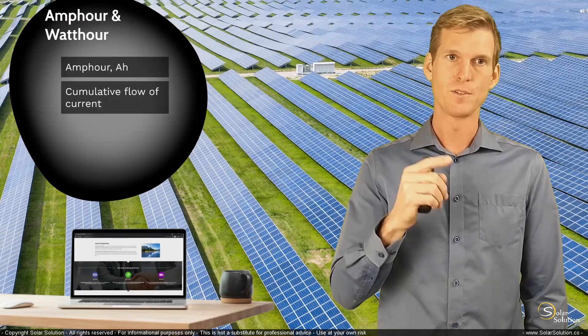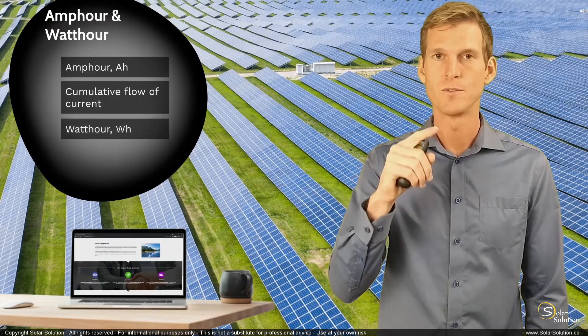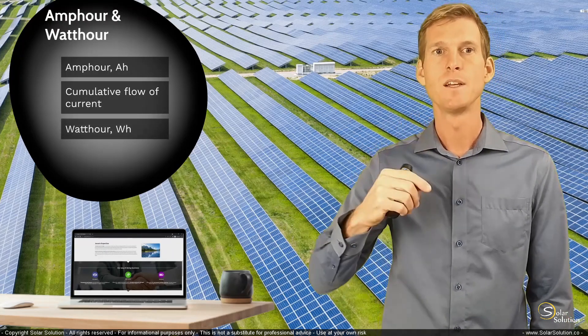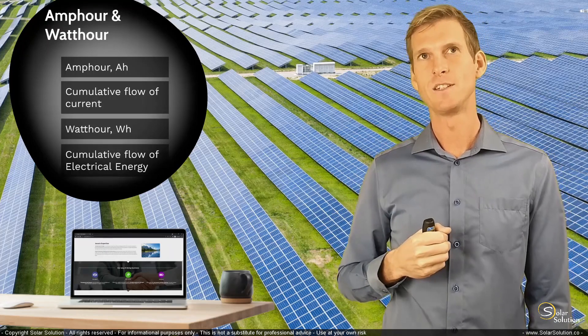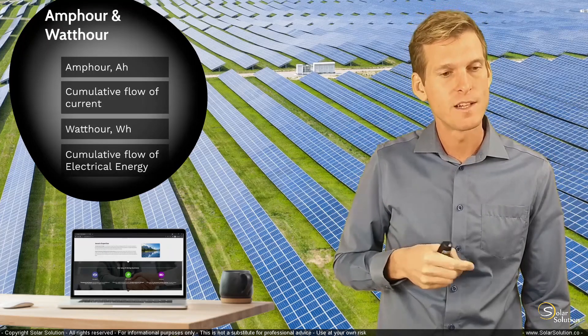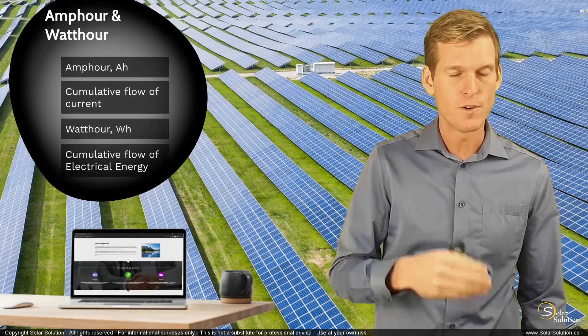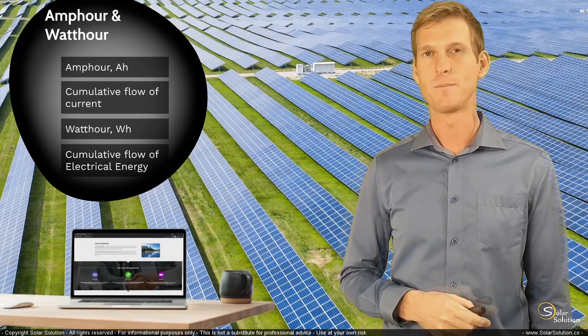And the same is for the watt hours. So the watt hours, or WH, is the cumulative flow of electrical energy — the cumulative flow of electrical energy with reference to a specific time frame.